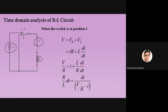The switch has two positions. When connected to position one, the voltage source is connected across the series combination of R and L. When connected to position two, the voltage source is disconnected and a short circuit link is placed across R and L. The function of the switch is clear.